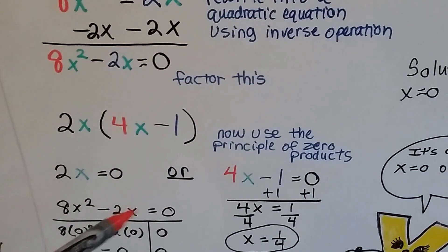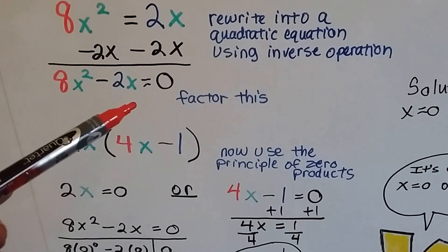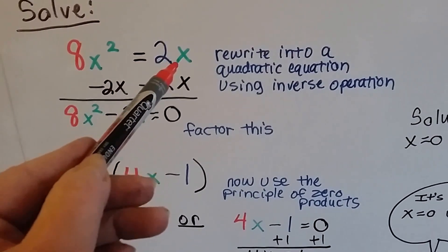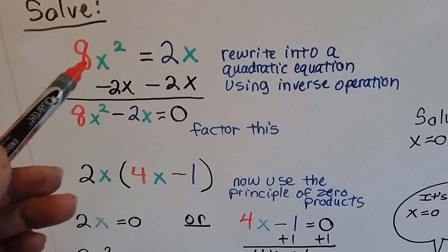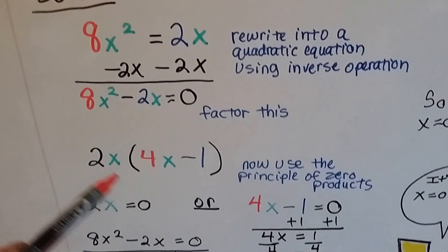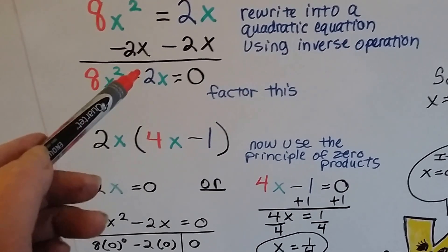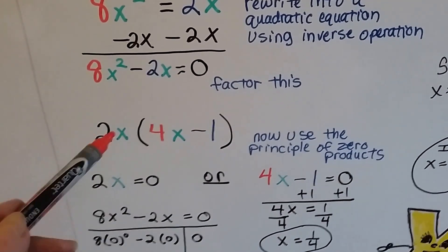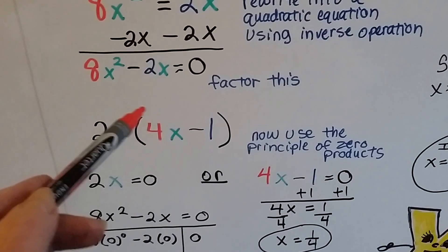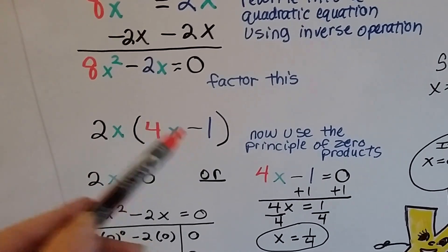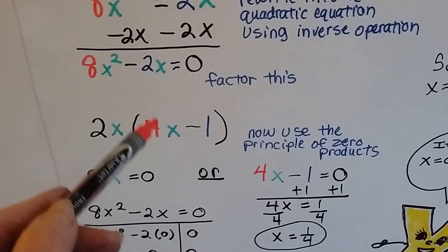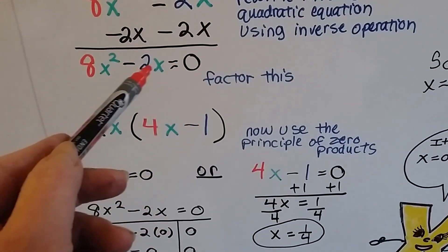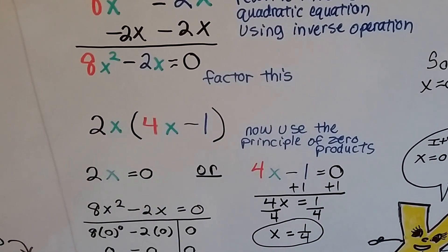We don't want to use that principle of zero products until we've factored first. So even though it was already like this with something on this side of the equal sign, we wanted to factor it first. So now we've got 8x squared minus 2x equals zero. It could be factored as 2x times 4x minus 1. 2x times 4x is 8x squared. 2x times minus 1 is minus 2x.